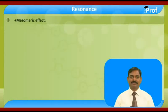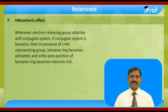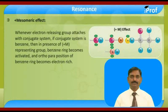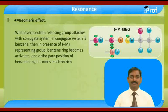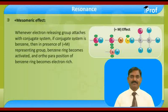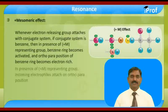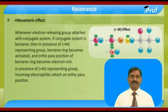Plus mesomeric effect: whenever an electron releasing group attaches to a conjugate system, if the conjugate system is benzene, then in the presence of a plus M representing group, the benzene ring becomes activated and the ortho and para positions of the benzene ring become electron rich. In presence of a plus M representing group, the incoming electrophile attaches on the ortho and para positions.